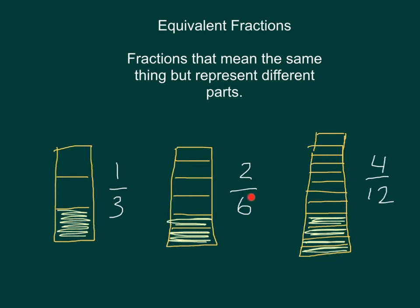For this fraction, two-sixths represents two out of six pieces. And here, four-twelfths represents four out of twelve pieces. Each of these fractions mean the same thing but represent different parts.